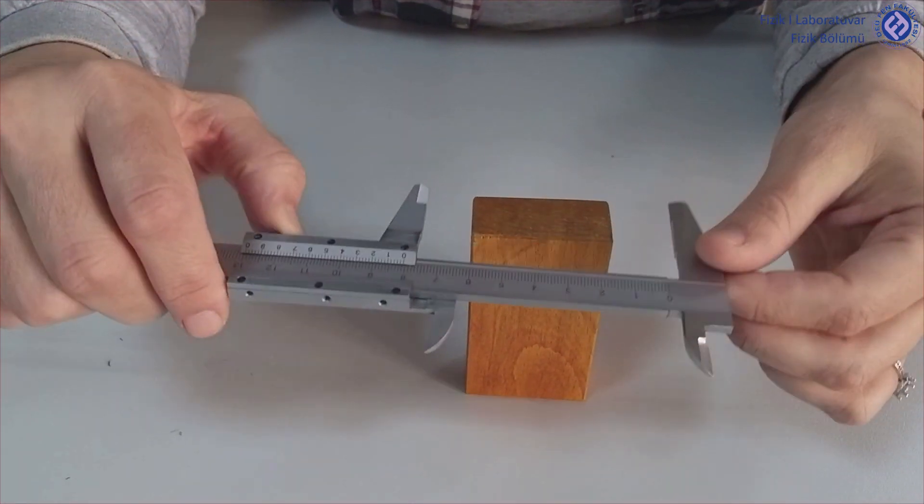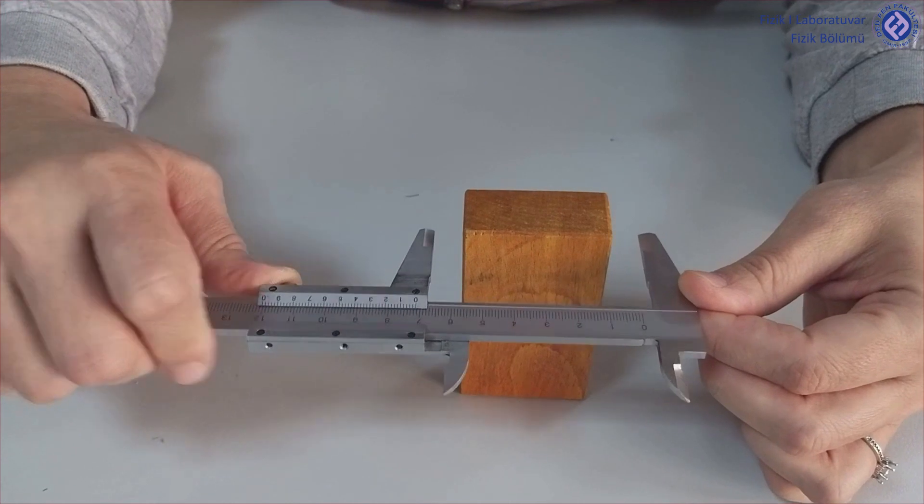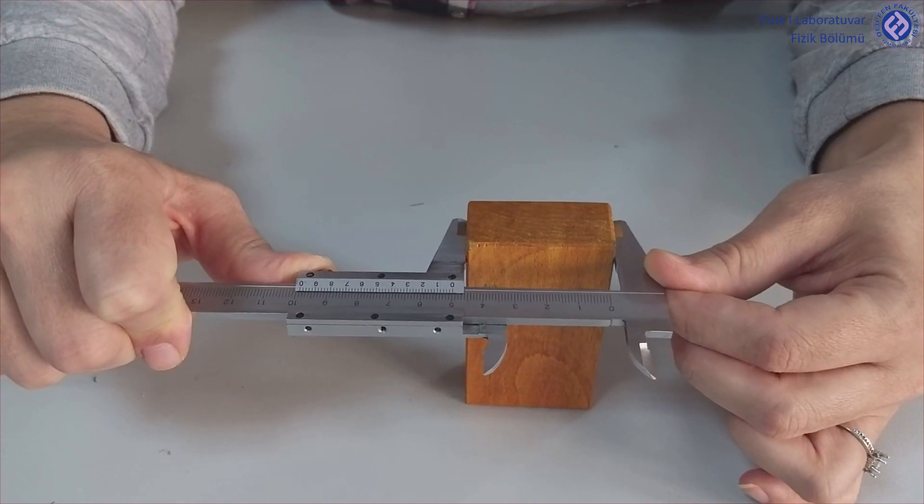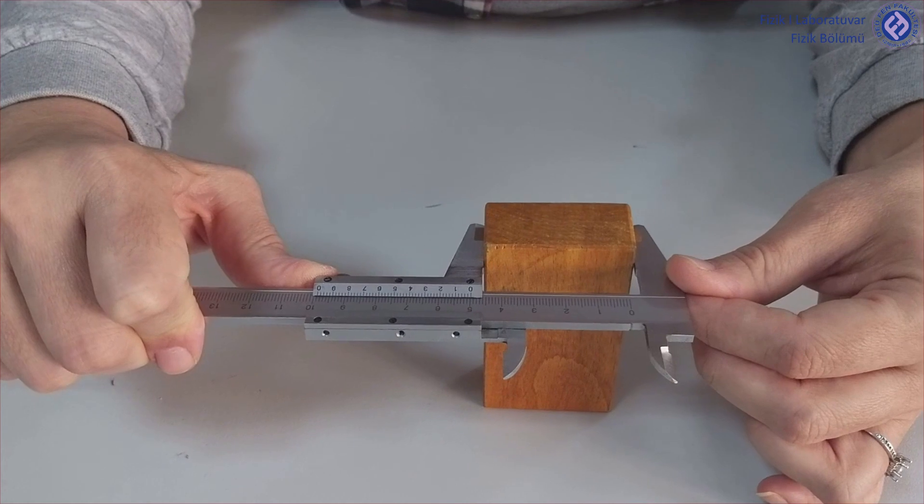After placing the object between the jaws of the vernier, the place of the zero lines of the main scale and the vernier scale is checked.